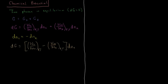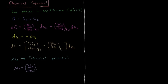Now we can define a quantity that makes this easier to write and will be very useful: the chemical potential, mu. Mu of a given phase alpha — be that solid, liquid, gas, etc. — is equal to the partial derivative of the Gibbs energy of that phase with respect to the number of particles in that phase at constant pressure and temperature. So mu for a given phase is a function of temperature and pressure.